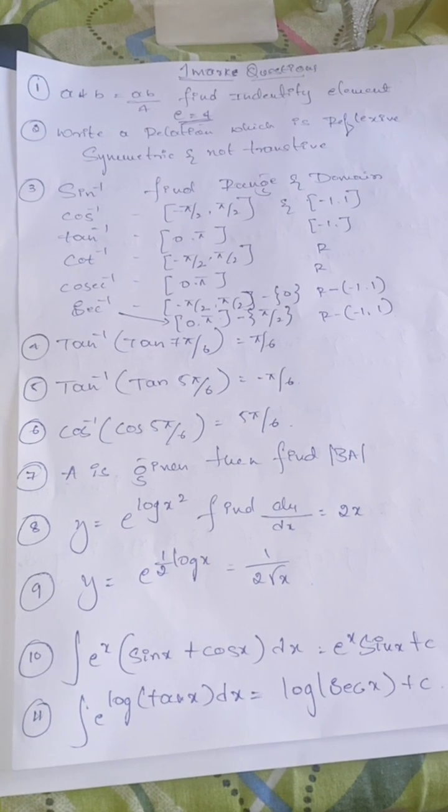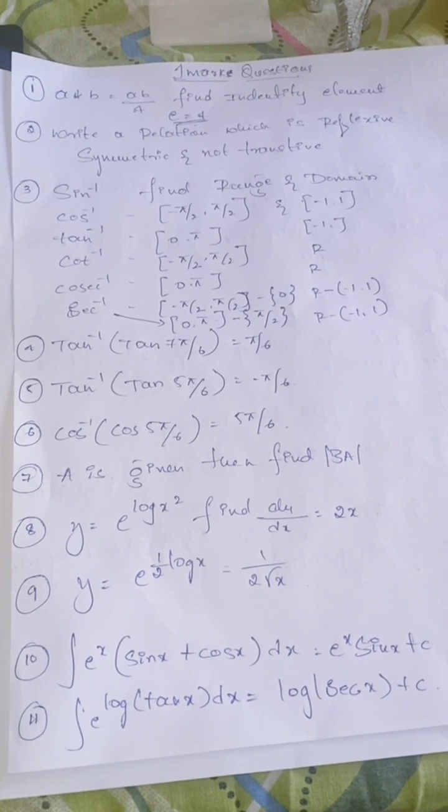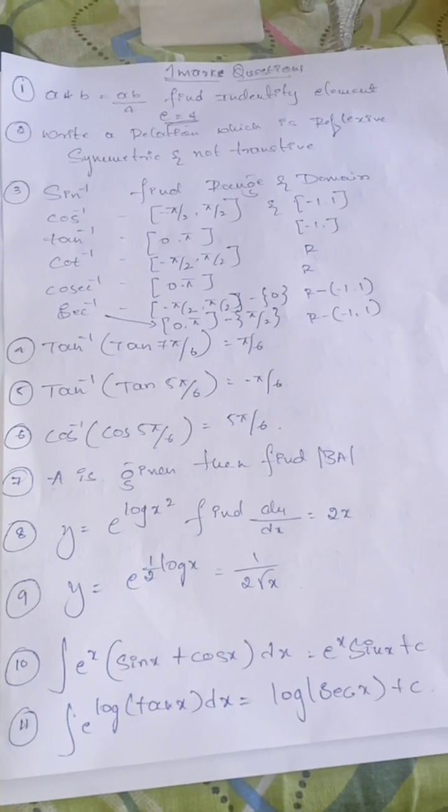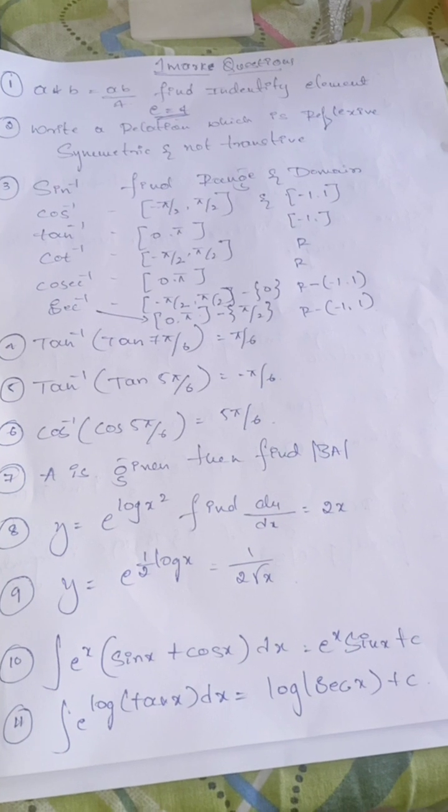Cos inverse cos 5π/6 is 5π/6. In matrices, A is given matrix, then find determinant of 3A. In determinants, y equals e power log x squared, find dy/dx. Answer is 2x.